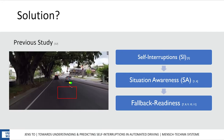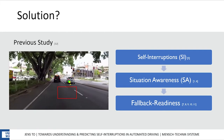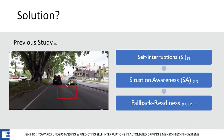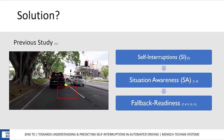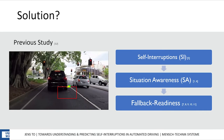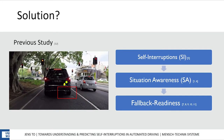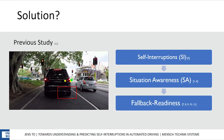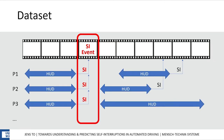A previous driving simulator study found out that drivers regularly self-interrupted between watching a TV show on a head-up display and the driving environment during automation. Studies showed that more self-interruptions are likely to improve situation awareness, which in turn improves fallback readiness.